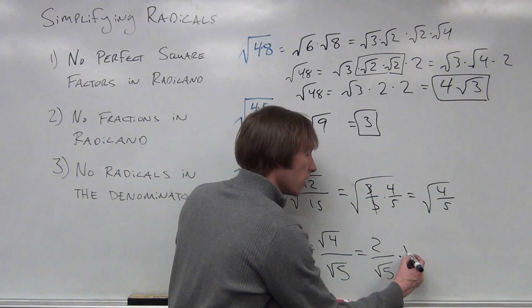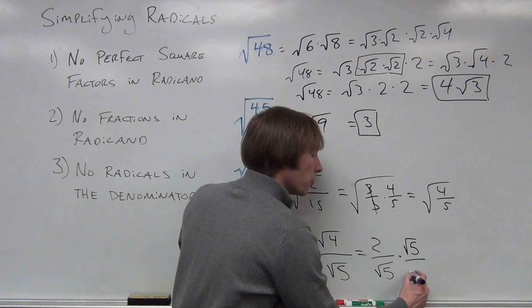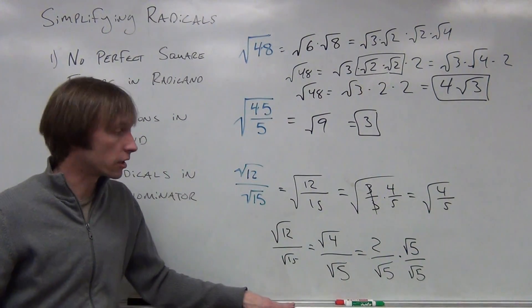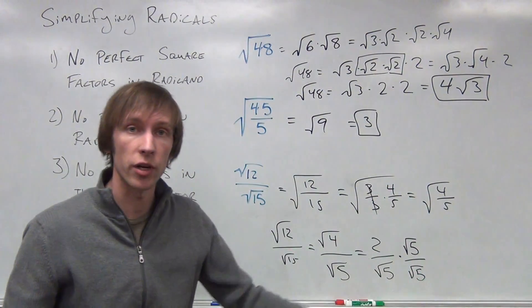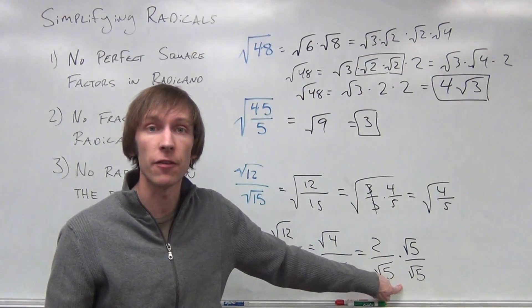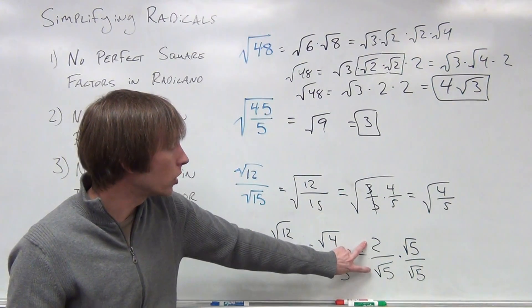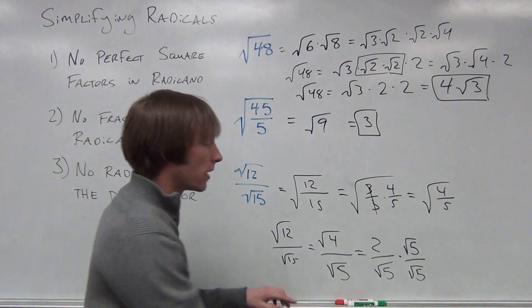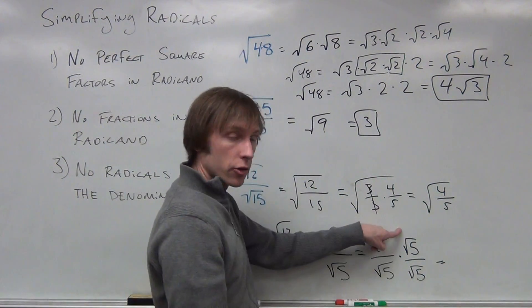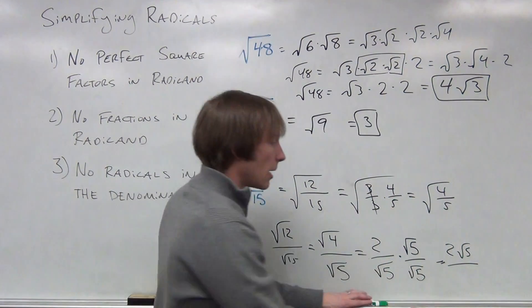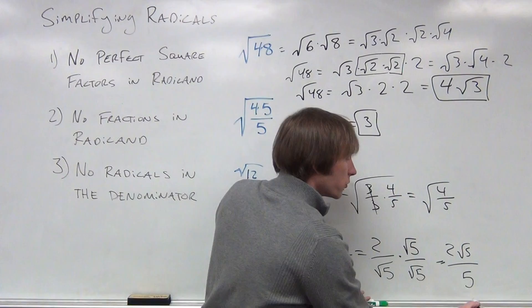So we will multiply by 1. But this 1 is going to look a little bit funny compared to the 1 that you're used to seeing. This 1 is represented as the denominator over itself. Any number divided by itself is equal to 1. So 2 divided by the square root of 5 multiplied by radical 5 over radical 5 is, multiply the numerators, 2 radical 5 over, multiply the denominators, the square root of 25.